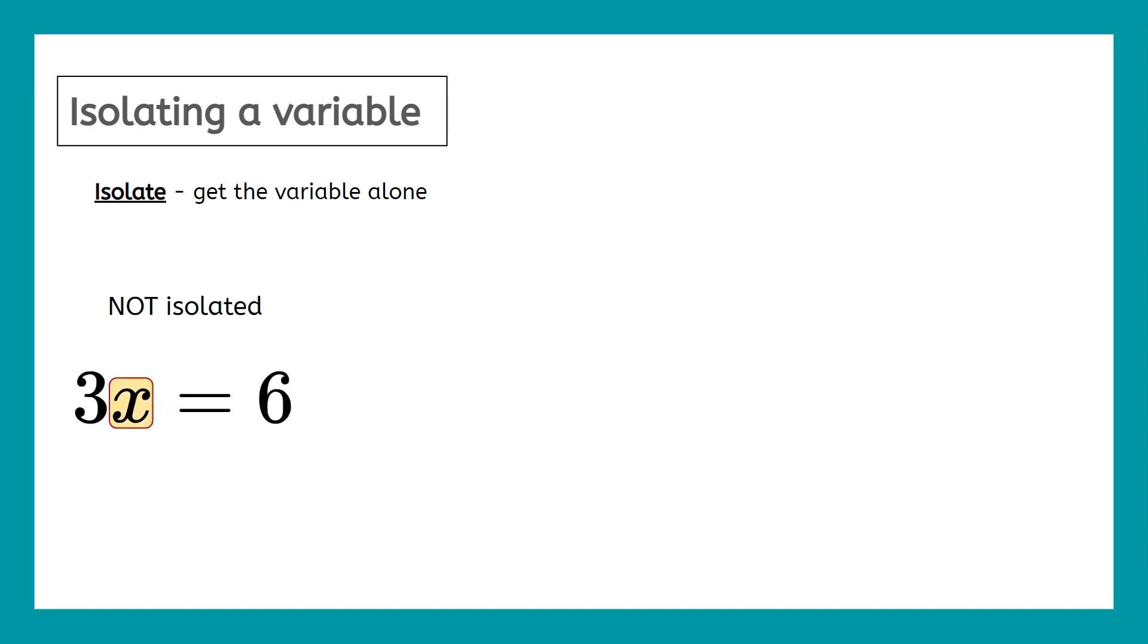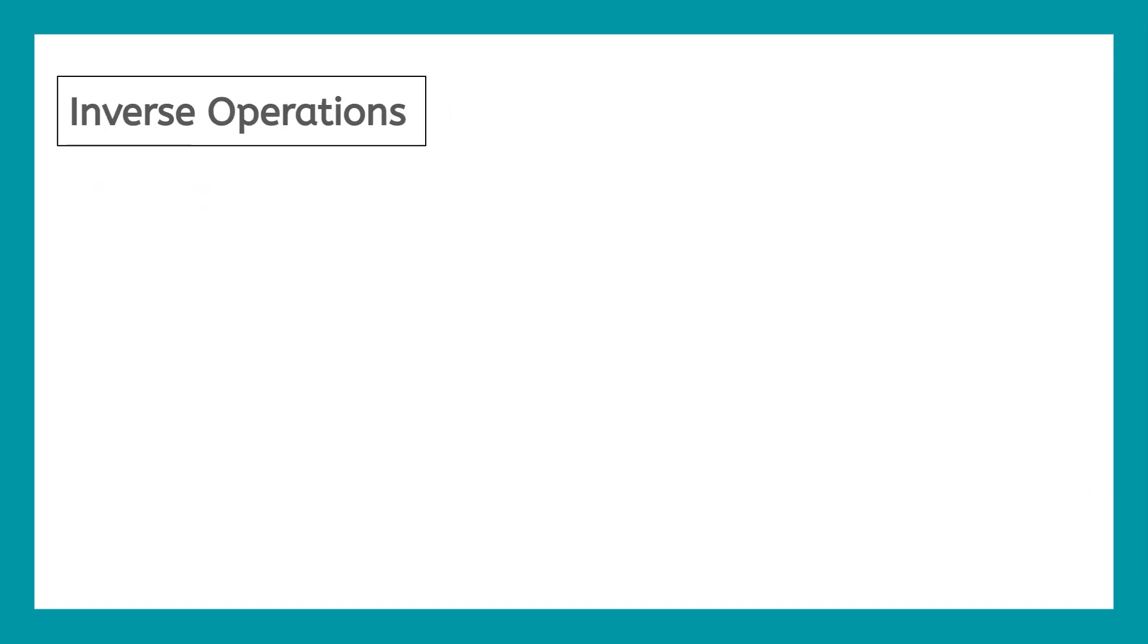So that x is not isolated. Meanwhile over here, we've rearranged the equation slightly. We'll talk about how to do this in just a second. And now x is all by itself. It's isolated. x is equal to 6 over 3 and the x is alone. How do we get things by themselves? How do we rearrange things? It all has to do with inverse operations.